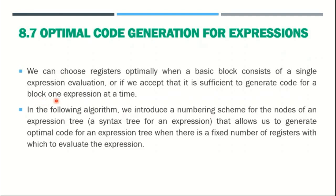Whenever we have sufficient registers, then only we can generate optimal code for the basic blocks. That is why we consider only one instruction at a time for each and every basic block. When we consider a single instruction, we obviously have efficient registers to generate the target code or optimal code for that particular expression.